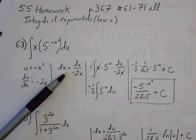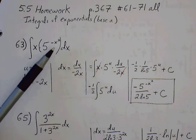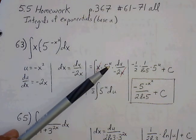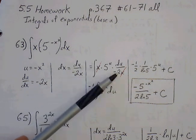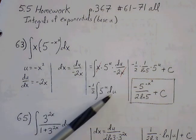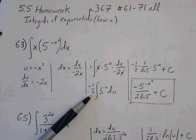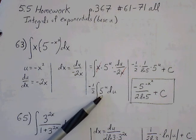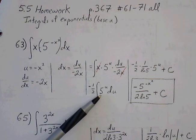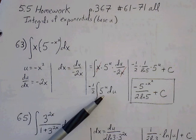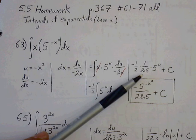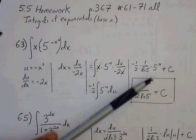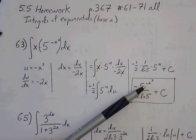We make our substitutions. For the exponent, negative x squared gets replaced with u. dx gets replaced with du over negative 2x. The x is conveniently canceled out. Make sure that we keep track of the negative 2 — pull the negative one-half out. Now we have the rule for a to the u, which is 1 over natural log of a times a to the u plus C. We combine this as one fraction and replace u back in terms of x.